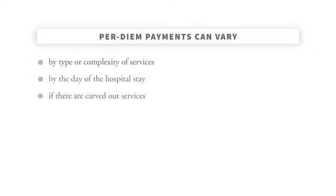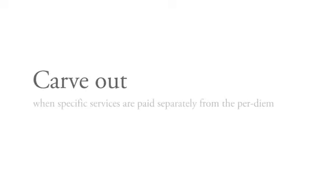A third variant would allow for separate payments for particularly high-cost things, like really expensive drugs. In this case, the per diem would be set to cover everything except some identified set of drugs, for which the insurer would pay separately, maybe on a fee-for-service basis. There's a term you might hear associated with this sort of situation — we call it a carve-out. Here, the expensive drugs would be said to be carved out of the per diem payment arrangement, and they'd be handled by a separate payment agreement.